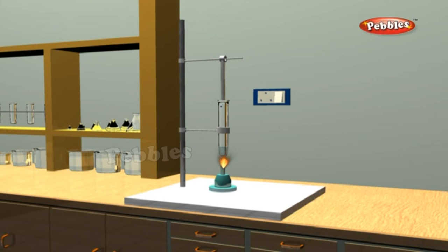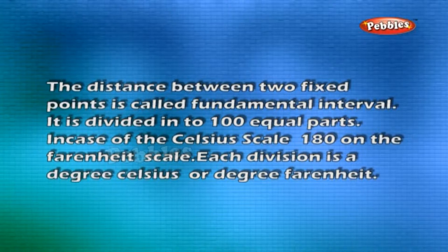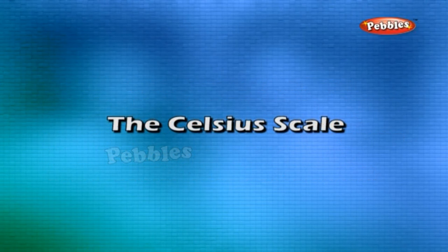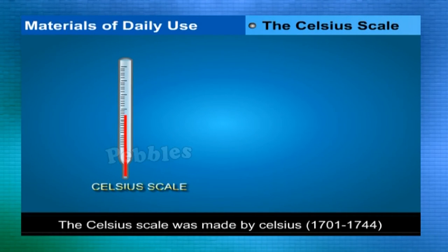The bulb is then placed in steam to give the upper fixed point, marked as 100°C or 212°F. The distance between the two fixed points is called the fundamental interval, divided into 100 equal parts on the Celsius scale and 180 equal parts on the Fahrenheit scale. Each division is one degree.